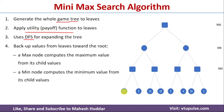When we are at leaf node 10 and back up to its parent, that parent is a Max node, so we assign the maximum value among the children. Between 10 and 9, the maximum is 10, so we assign 10. When we then have values 10 and 20 to back up to their parent, that parent is a Min node, so we assign the minimum of those two values. Those are the two key rules to remember.